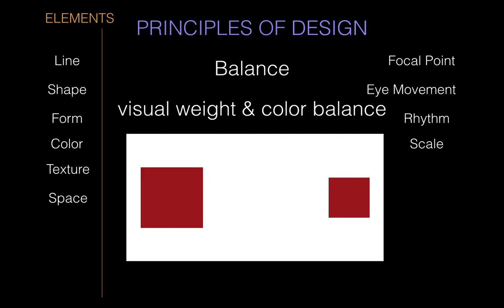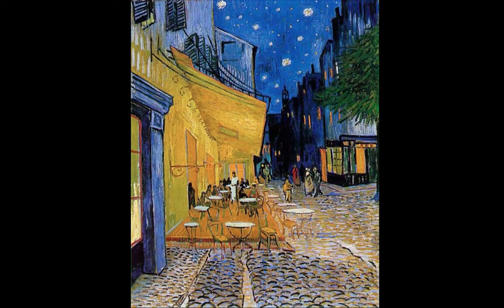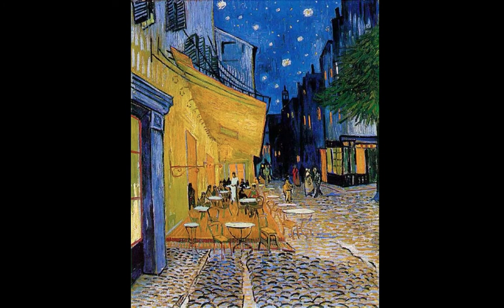Proximity can also create visual weight. The balls that are closer together create more of what's called visual tension — the proximity of an object to another object or to the border of the frame. The more tension is created, the more visual weight there is. So because these balls are closer together, they create more tension, which creates more weight, and makes the image seem unbalanced toward the left. Color balance comes into play too, because you could have an entirely physically balanced image but throw it out of whack by having a weird distribution of colors.